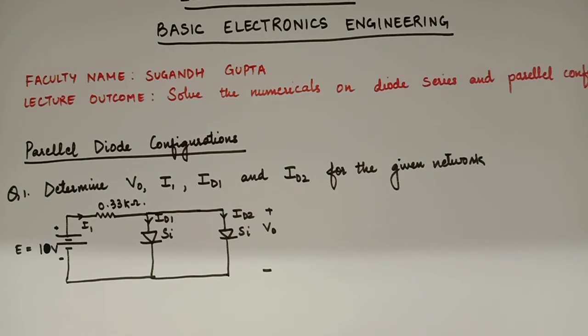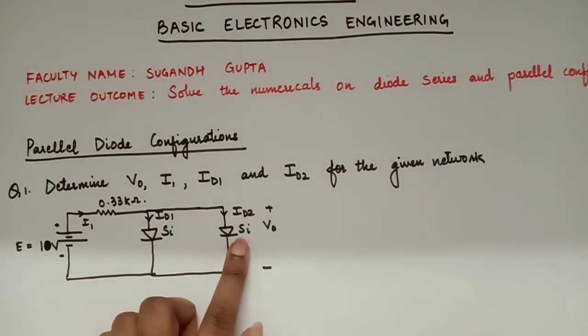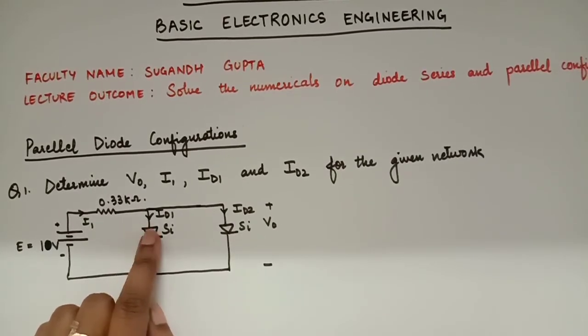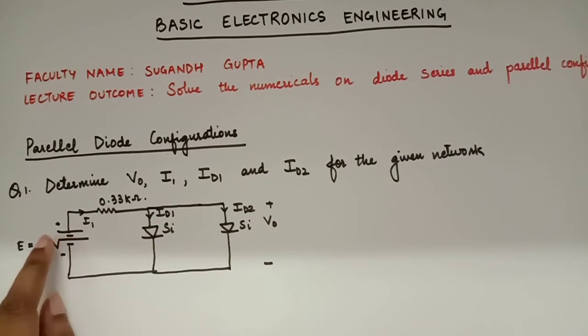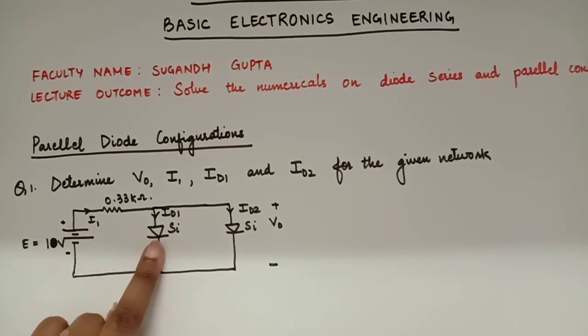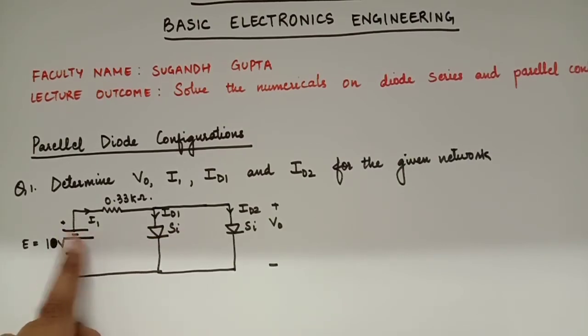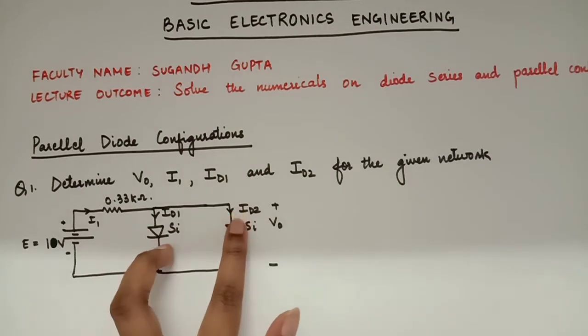Now, we have a numerical in front of us on your screens and it's a parallel diode configuration. So, we have to find out the given parameters over here. That is V0, I1, ID1, ID2. You can see all the parameters denoted in the numerical as well, in the network as well. Let's start solving all these parameters. First of all, just see whether the diodes are forward or reverse biased. I can see that both the diodes are forward biased because the P semiconductor of diode is connected to the positive terminal of the battery and the N semiconductor is connected to the negative terminal of the battery. Similar is the case over here. So, both the diodes are forward biased.